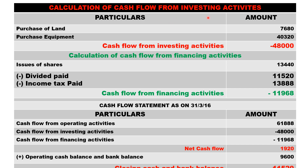Cash flow from investing activity: you get only purchase and sale. Purchase of land seven thousand six hundred eighty, then purchase of equipment forty thousand three twenty. You get a minus figure because there is no sale — sale is treated as income and purchase as expense. So we have only purchase, no sale. You get minus forty eight thousand, indicating it is a cash outflow not an inflow.